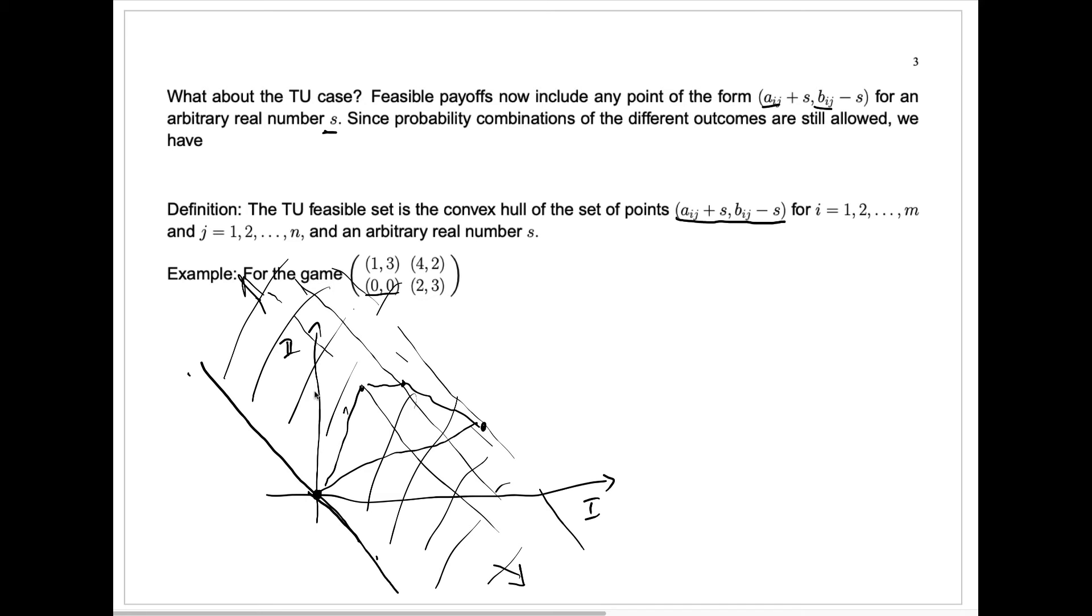Now, here's the question. Where will the players, who are allowed to make an agreement, where among this whole feasible set will they want to end up?